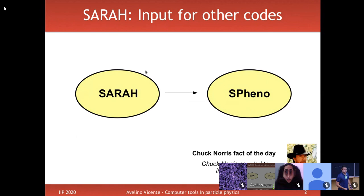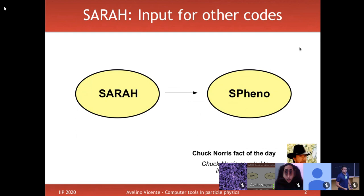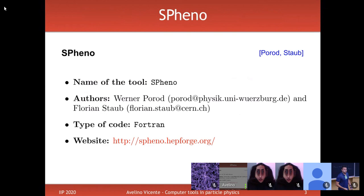In the second lecture we saw how to use SPheno to calculate numerical things about the same model in an efficient and easy way. The important thing is that these two codes are connected. With SPheno alone you can only handle a limited number of models — the MSSM and some other SUSY models — but with this connection you can define your model in SARAH, do all the analytical calculations, and then pass that information to SPheno.